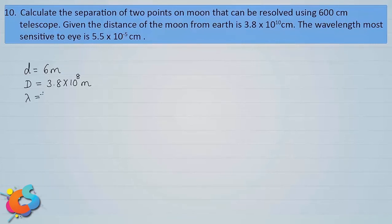The wavelength most sensitive to the eye, λ = 5.5 × 10⁻⁵ centimeter = 5.5 × 10⁻⁷ meter. We are supposed to find the separation x between the two points on the moon.